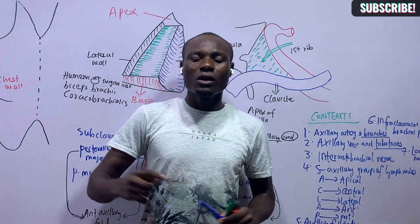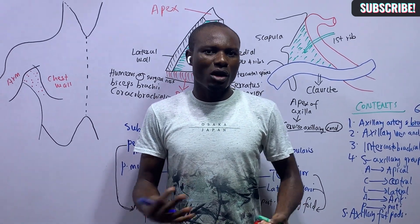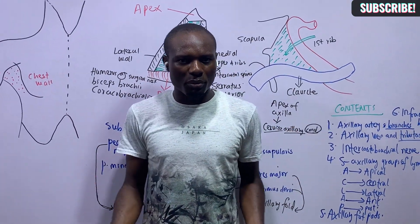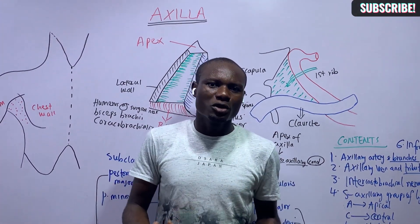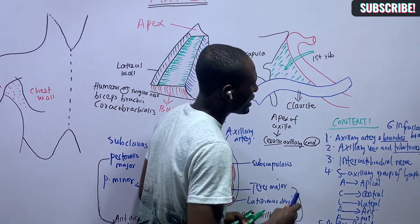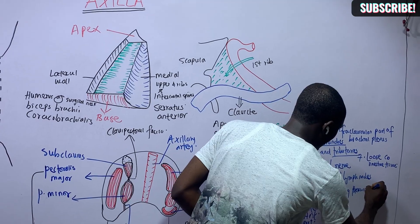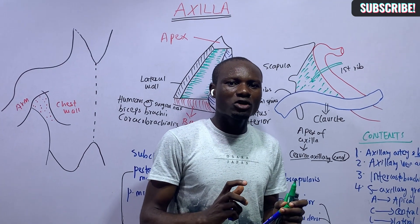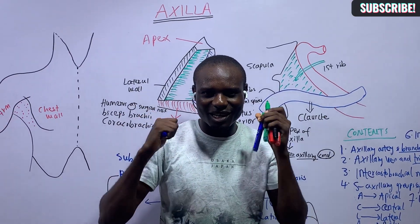Clinical correlates of the axilla include measurement of axillary temperature, boils in the axillary region, axillary lymphadenopathy, axillary artery thrombosis, and spontaneous thrombosis of the axillary vein. Deep injury within the axilla can injure the intercostobrachial nerve as well as the long thoracic nerve — another very important content of the axilla. Surgical procedures in the axillary region must be done carefully to avoid damage to the long thoracic nerve, as injury causes winged scapula.